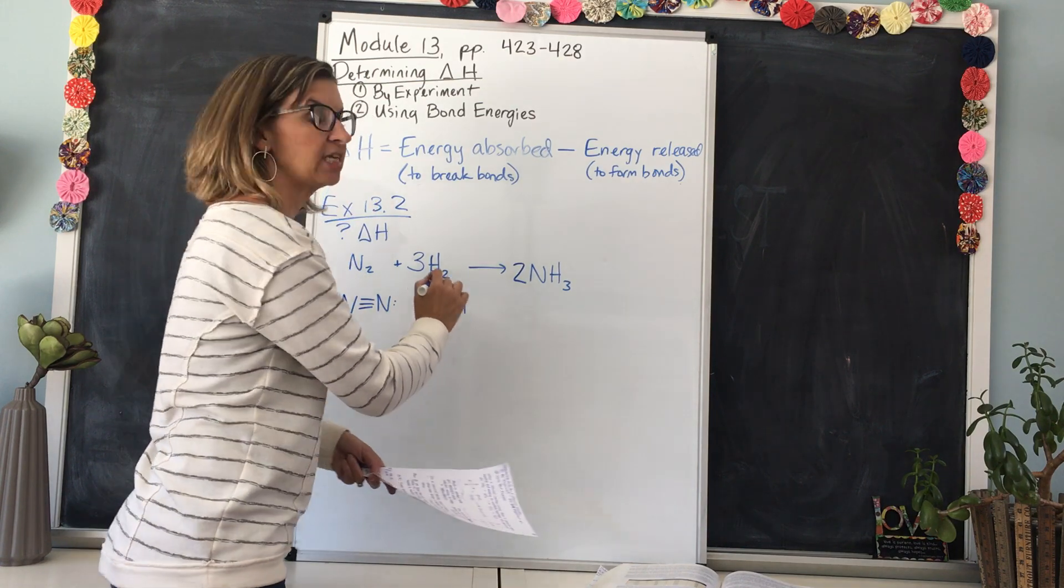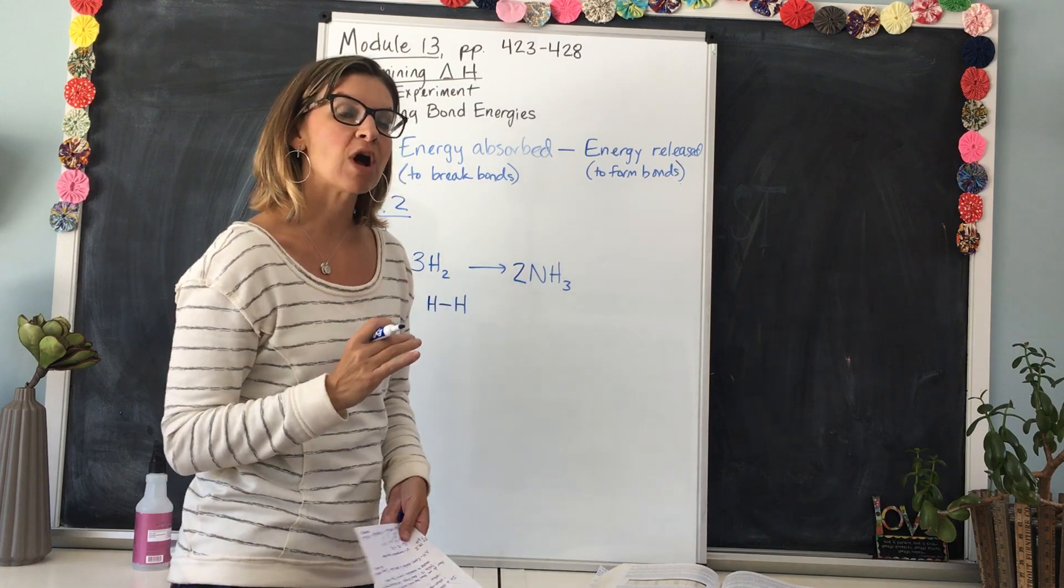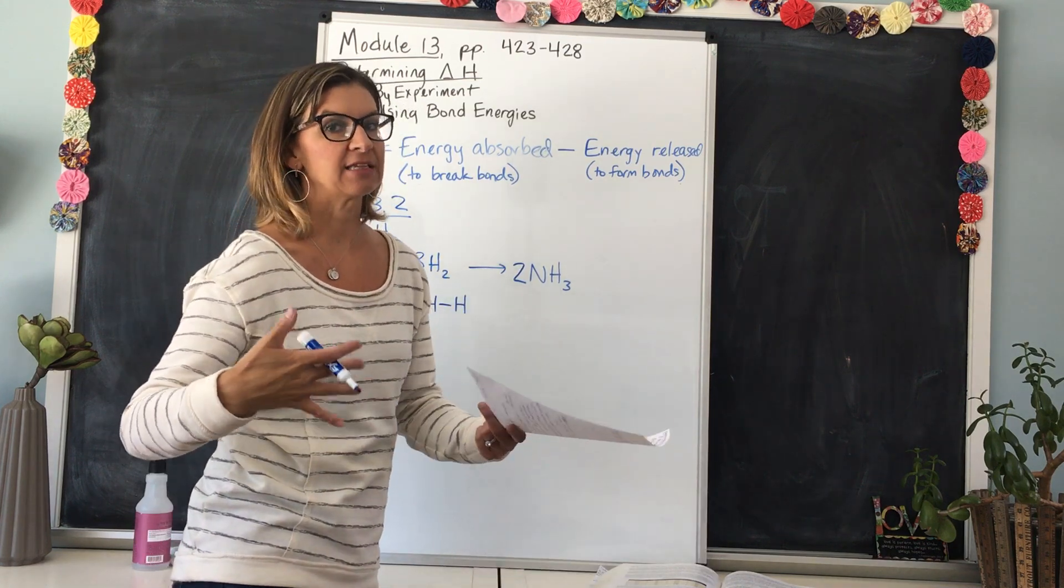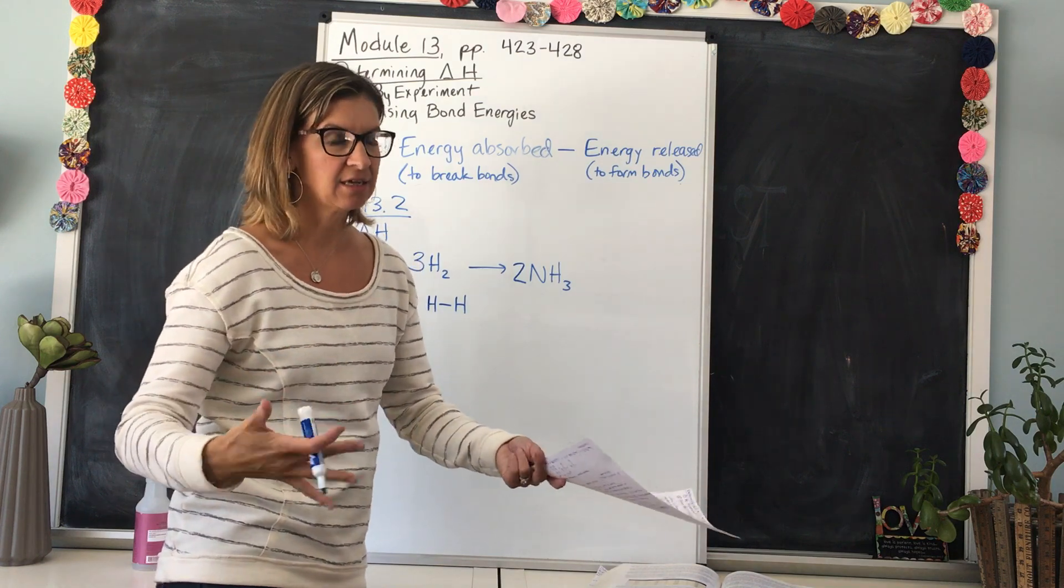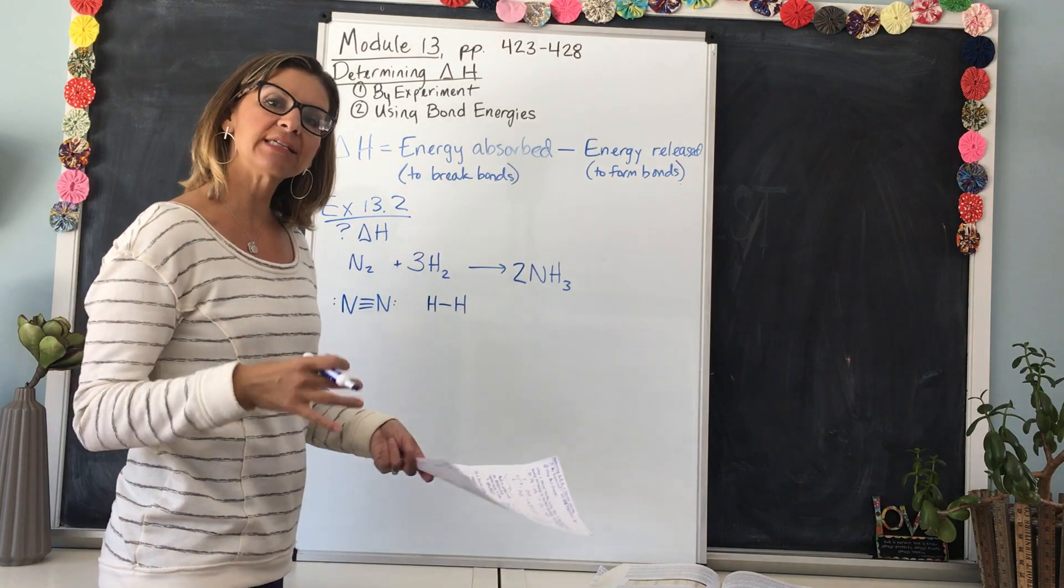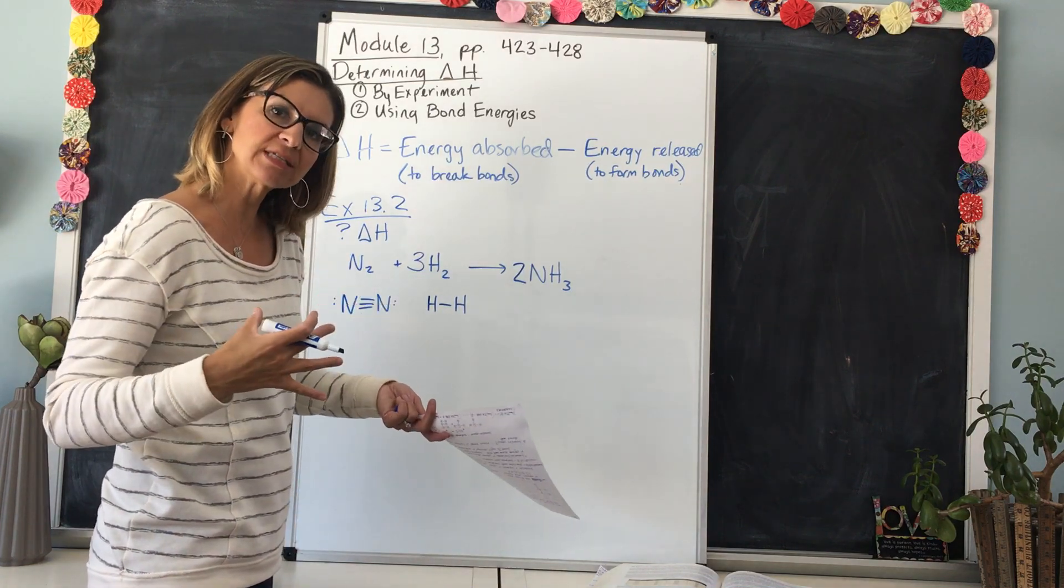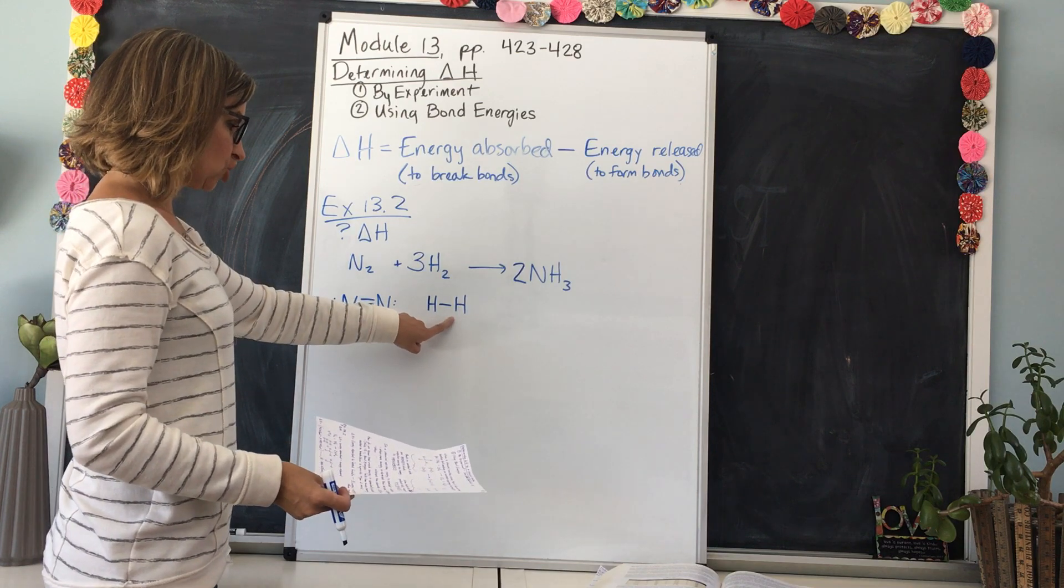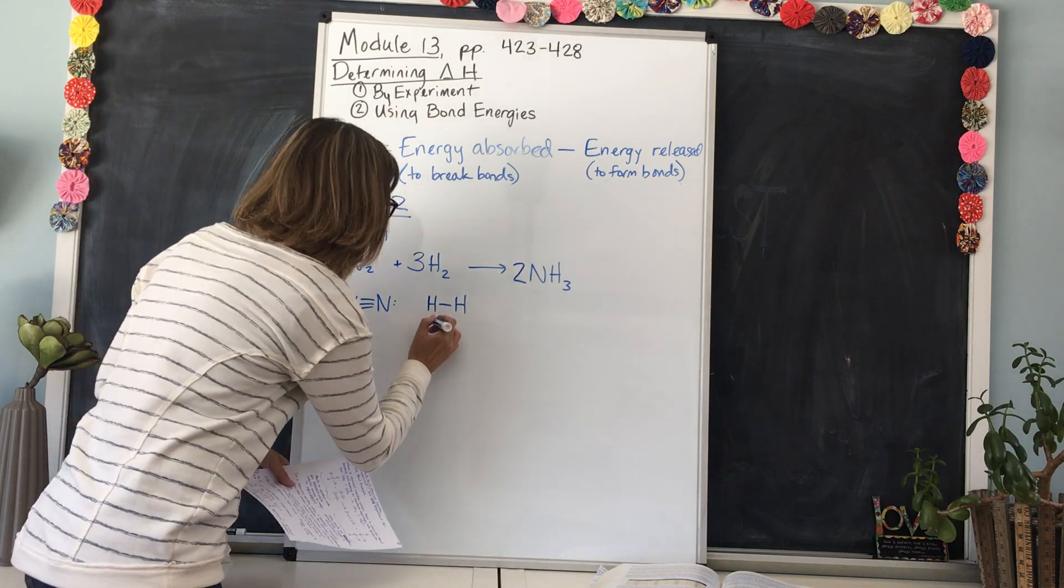And then for the H2, we would have H bonded to H. Remember, hydrogen is the only atom that only wants to get two electrons in its outer valence shell. All the other atoms are really wanting eight, so hydrogen is the exception. So it's just going to share one single bond, and then they each have two electrons and they're happy. But there's not only one H2 molecule, there are three, so we need to write three out.